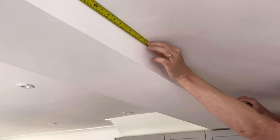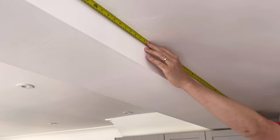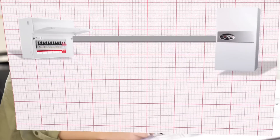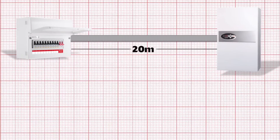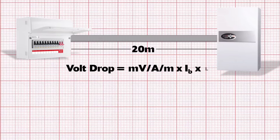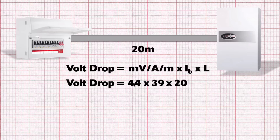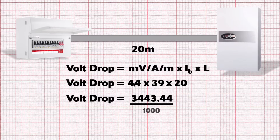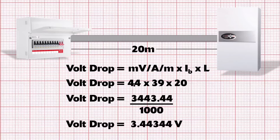If it's a new property, you can measure the length off the building plan using tools in CAD drawings. For our boiler circuit, the cable is 20 metres long. So we take our value from Table F6 of 4.4 millivolts, multiply it by the design current of 39.13 amps, and then multiply by the length of 20 metres. This gives us a value of 3,443.44 — but remember that this is in millivolts. To find the value in volts, we divide the answer by 1,000, giving us 3.44 volts.